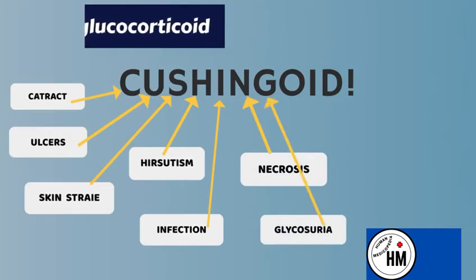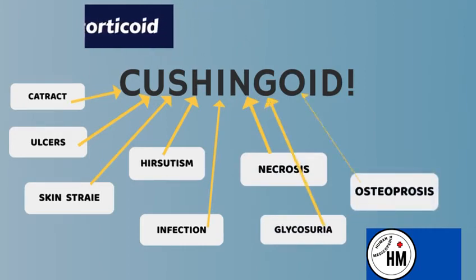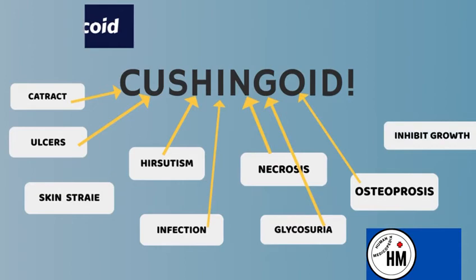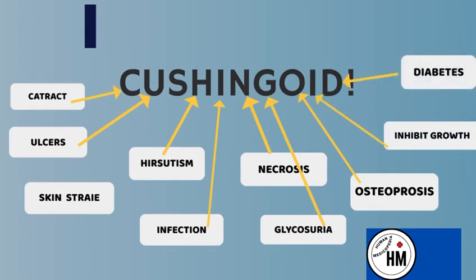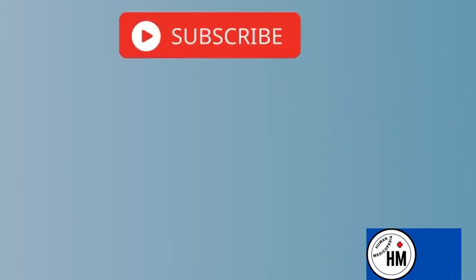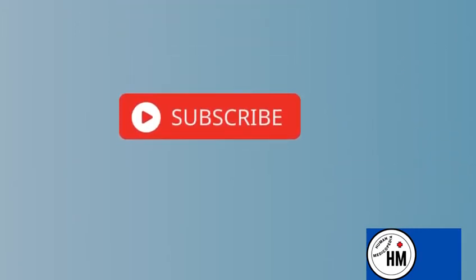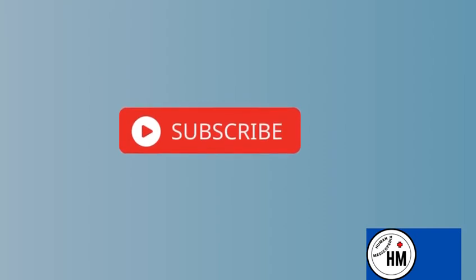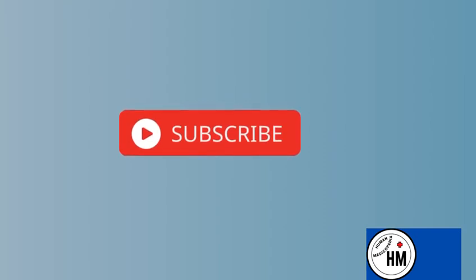Glucosuria, Osteoporosis, Inhibited growth, and Diabetes. That was all about glucocorticoids. Hope you liked the video — don't forget to subscribe to my channel and press the bell icon to get notifications of my next videos.